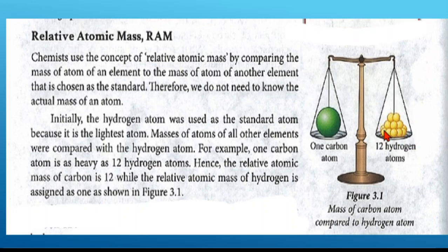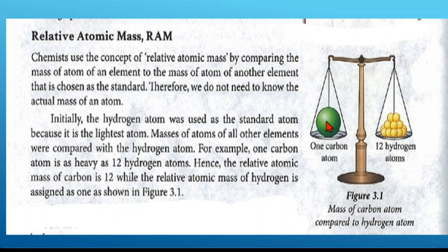For example, here in Figure 3.1, the mass of the carbon atom is compared to the mass of the hydrogen atom. Initially the hydrogen atom was used as the standard atom because it is the lightest atom. Masses of atoms of all other elements were compared with the hydrogen atom. For example, one carbon atom is as heavy as 12 hydrogen atoms, so the relative atomic mass of carbon is 12.